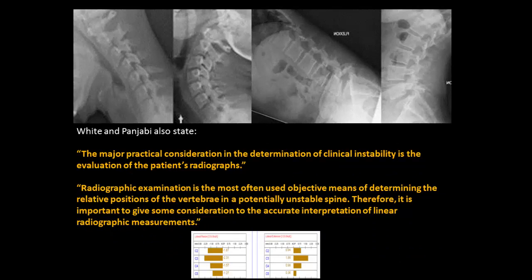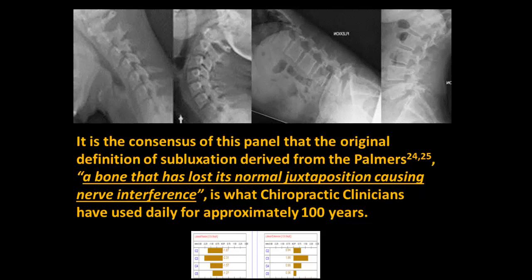They go on in the same book to say that a major practical consideration in the determination of clinical instability is the evaluation of the patient's radiographs. Radiographic examination is the most often used objective means of determining the relative positions of the vertebrae in a potentially unstable spine, so it is important to give consideration to the accurate interpretation of linear radiographic measurements. We see that spinal instability is identical to the definition of a spinal subluxation used by the chiropractic profession for over 100 years.